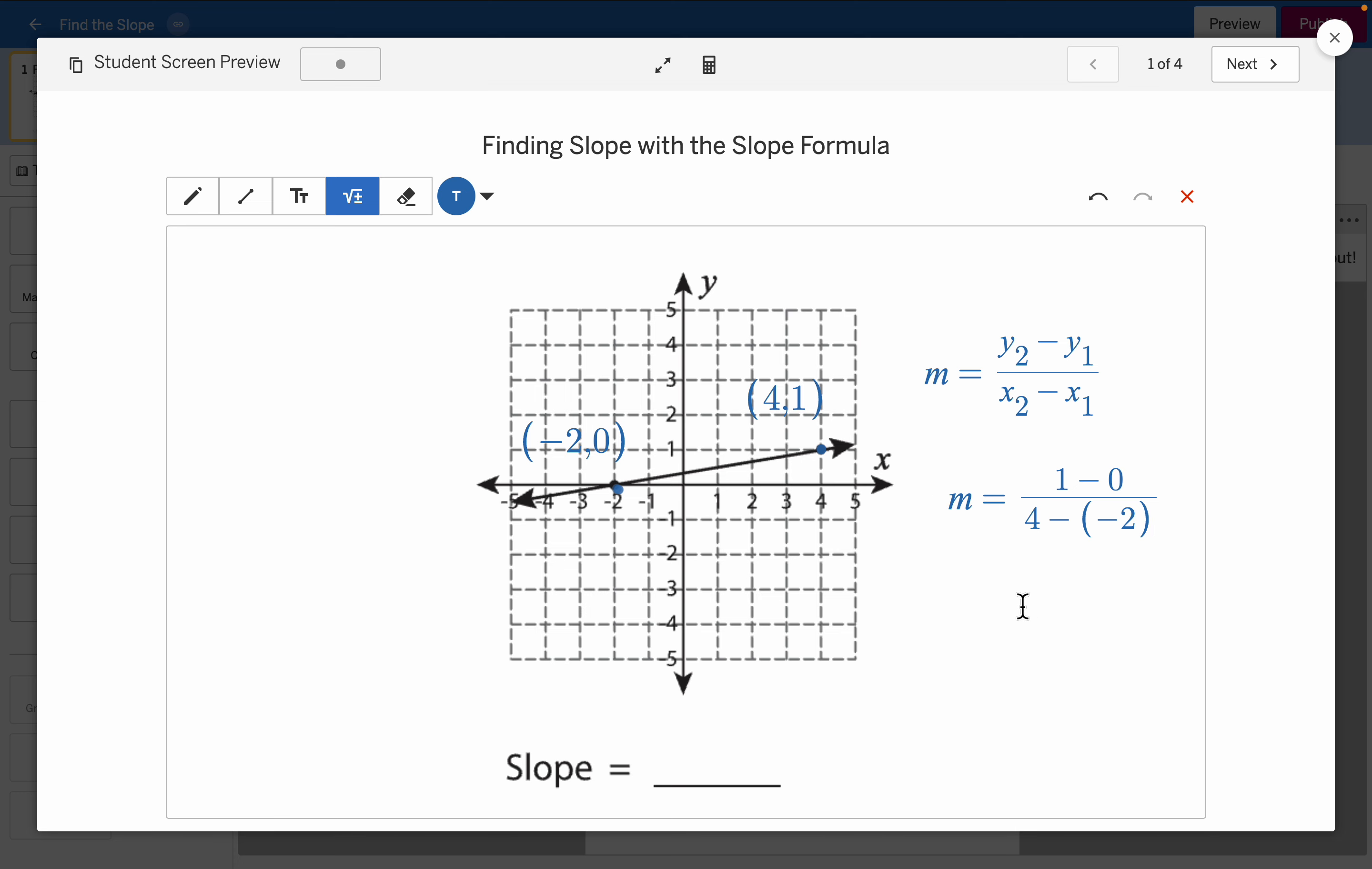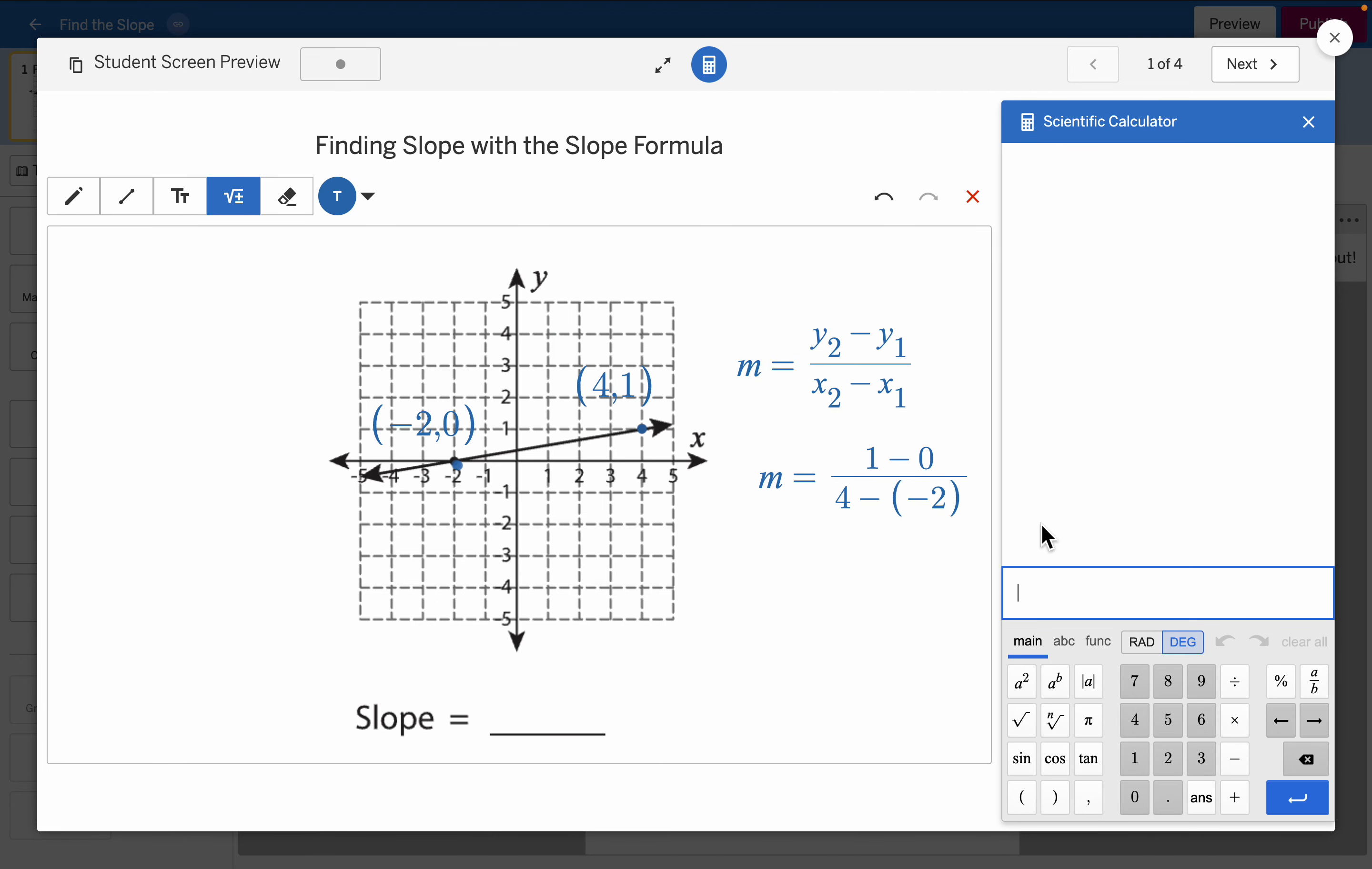Okay. Since we're using a calculator on this, I don't need to do any more simplification. So I'm just going to choose the calculator by going up here. And I'm just going to type this same expression, 1 minus 0 over 4 minus negative 2.